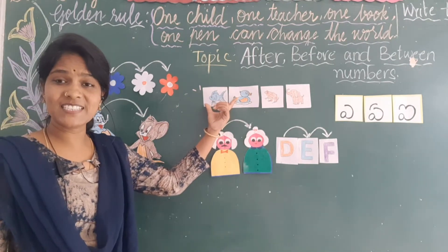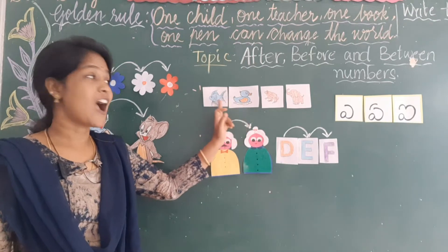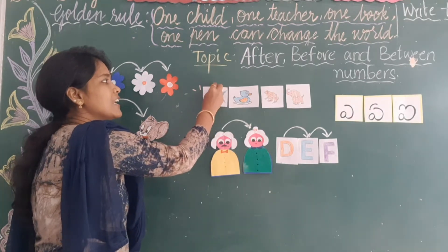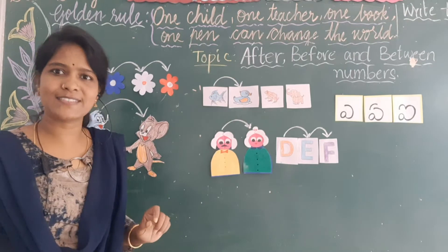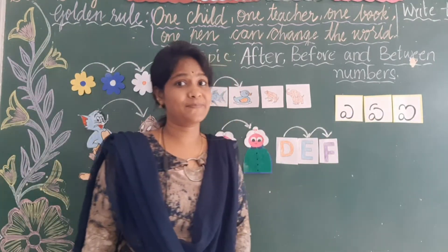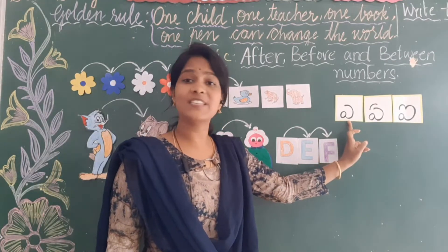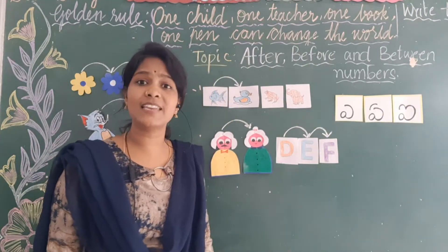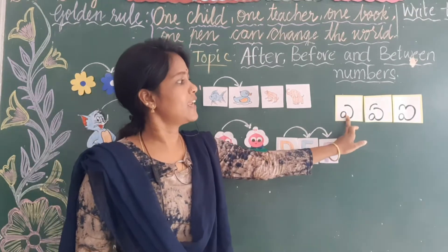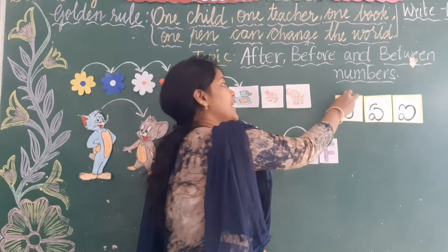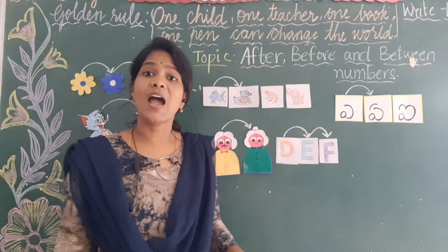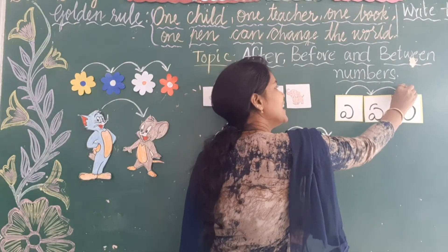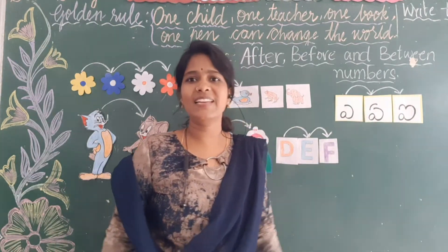Now look at these pictures — here is a fish, and after fish, duck is there. After fish, who is there? Duck is there. Now look at these letters — A, A, I. First tell me which letter is there? There is A. After A, which letter is there? A is there. After A, which letter is there? I. There is an I — after A, there is an I.